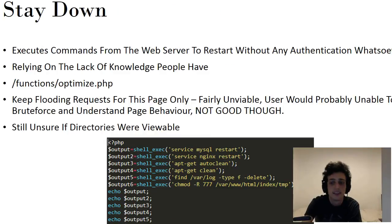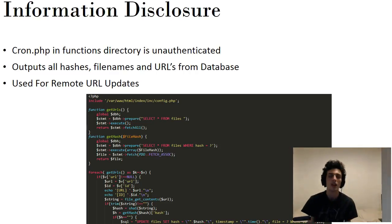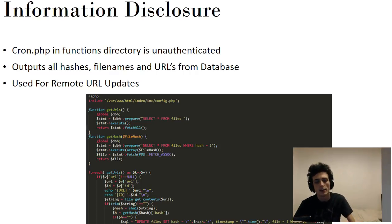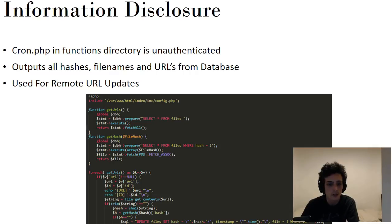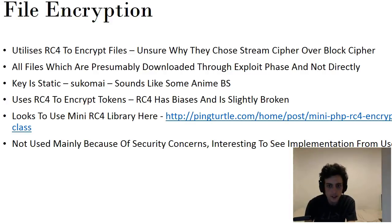Cron.php is really funny — it's obviously brute-forceable since cron.php will be in any wordlist. It's unauthenticated, there are no checks whatsoever, and it outputs all hashes, file names, and URLs from the database. If you want some malware samples, that page will give them to you — all you need is the server IP, which you could probably find, and then brute force it. This is actually used for remote URL updates, updating the hash, but it's not the best way of doing things.